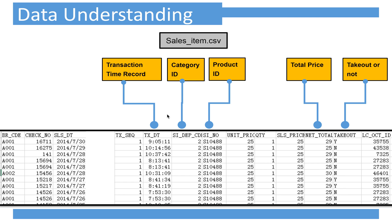The next dataset is salesitem. Some of the columns are the same as payment.csv and some are different. There is a transaction time record showing the time of the transaction — for example, the first record is 9 a.m., meaning the customer ate breakfast; others are lunch, afternoon tea, or dinner. Next is category ID, product ID, and net total — the total amount of that transaction adding product prices together. Finally, taken out or not — Y means yes, N means no.